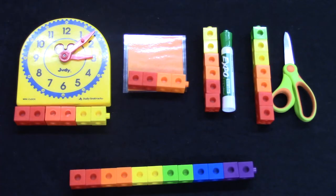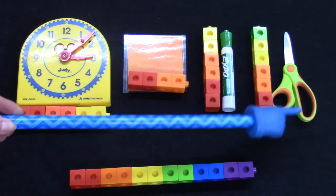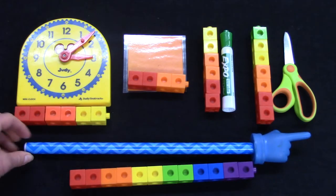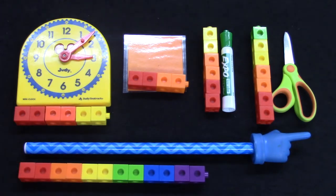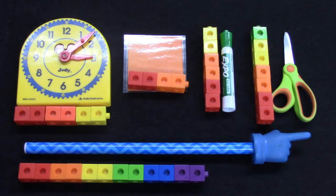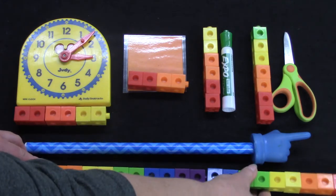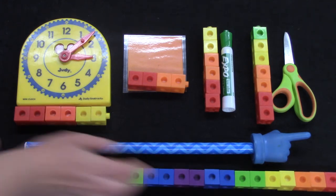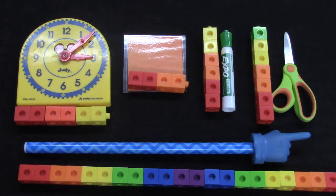I only have one more thing to measure. Look how long my pointer is. Oh no! My cubes did not form a long enough line to measure it. What could I do? What if we added some more cubes?